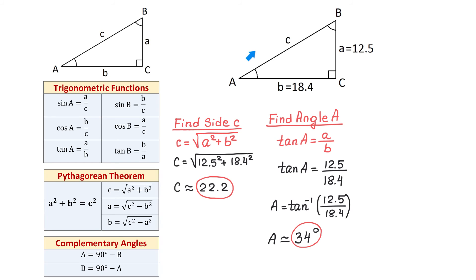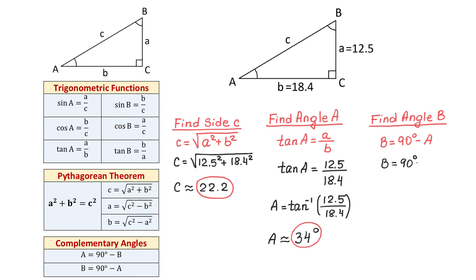So far, we found the hypotenuse C and angle A. Now we have to find angle B. The easiest way is to use the formula B equals 90 degrees minus angle A. Replacing A with 34 degrees, we get B equals 90 degrees minus 34 degrees, which gives us angle B equals 56 degrees. So, the hypotenuse is 22.2, angle A is 34 degrees, and angle B is 56 degrees.